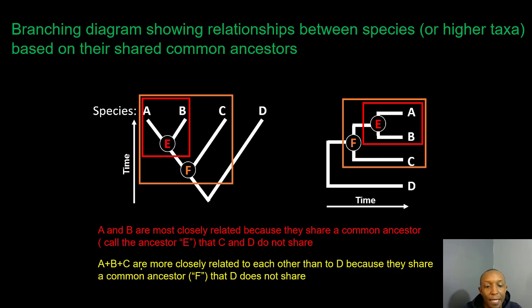Points A, B, and C are more closely related to each other than to D because they share a common ancestor F that D does not share. We can see this on both forms of the phylogenetic tree — points A, B, and C have point F in common, but point D does not share that ancestor.